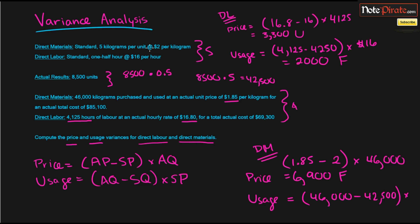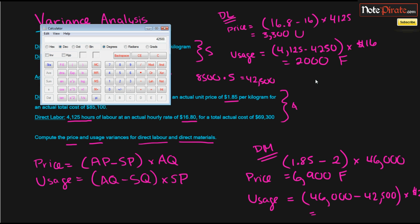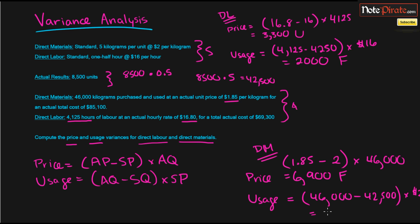which is $2 a kilogram. And that's going to be a difference of 3,500 kilograms times 2, which is $7,000. And that's going to be an unfavorable because our actuals are higher than our budgeted. So that's pretty much it